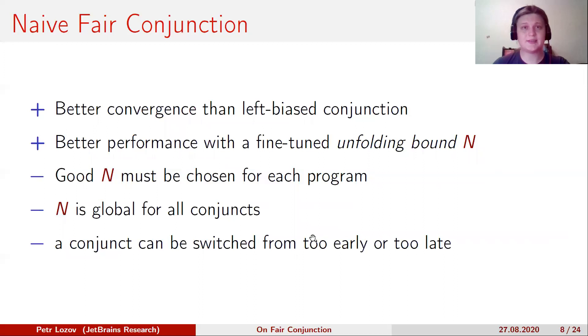To summarize, the naive algorithm has better convergence than left-biased conjunction and better performance with a fine-tuned N. However, we need to choose N for each program.